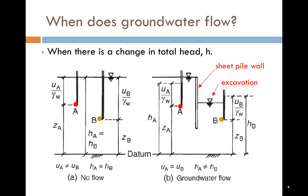For groundwater to flow, a change in total head h is required, and this is illustrated in the two figures. On the left, the two points A and B have different elevation heads and different pore pressure heads, but the total heads are the same, so there is no flow of water between A and B. On the right, we have installed a sheet pile wall so that we can excavate on one side. Here the total heads at A and B are no longer the same, so water will flow between them around the base of the sheet pile wall.